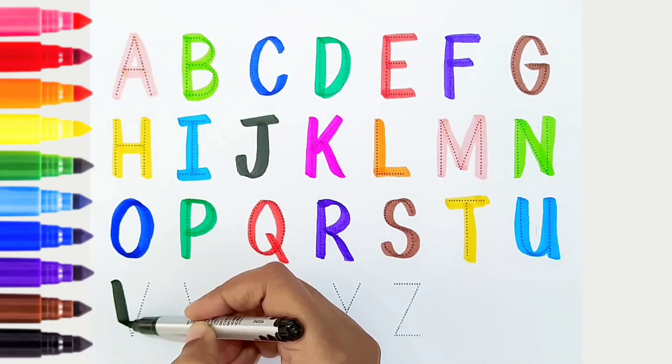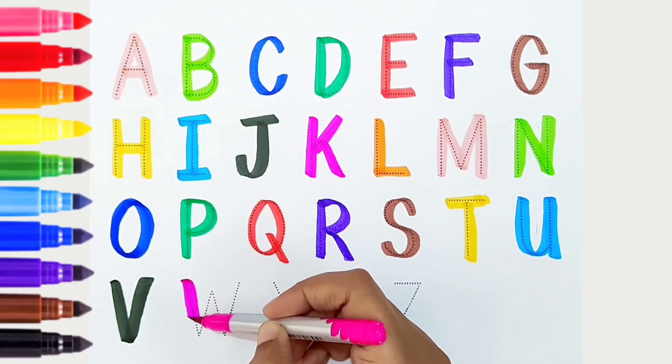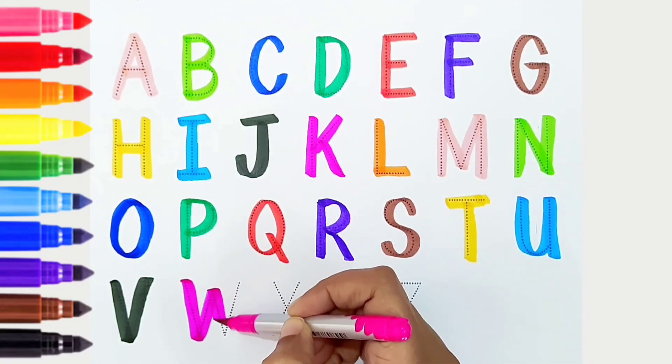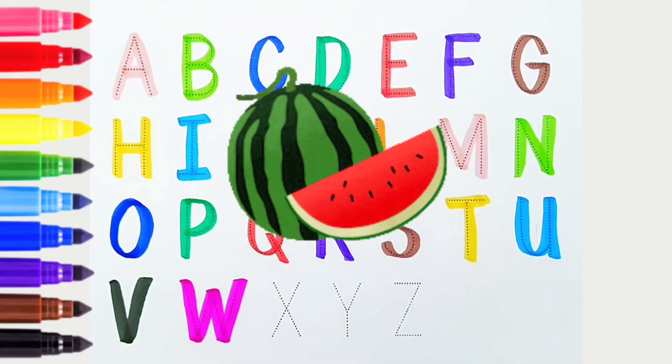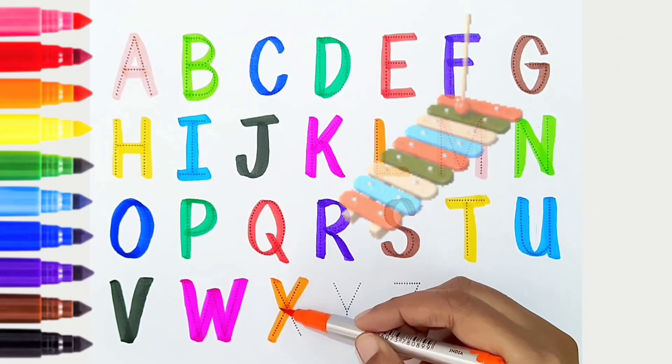V, black color, is for van. W, dark pink color, is for watermelon. X, orange color, is for xylophone.